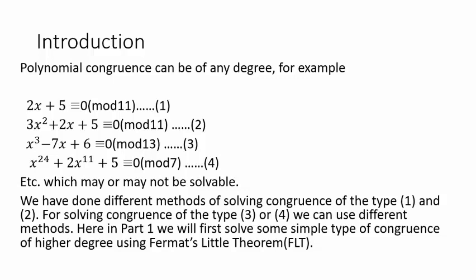Look at the first congruence: 2x + 5 ≡ 0 (mod 11) — it's a linear congruence. The second, 3x² + 2x + 5 ≡ 0 (mod 11), is a quadratic congruence. The third has degree 3: x³ − 7x + 6 ≡ 0 (mod 13), and the fourth has degree 24. We have already studied how linear and quadratic congruences are solved. You can use diophantine equations for the linear case.